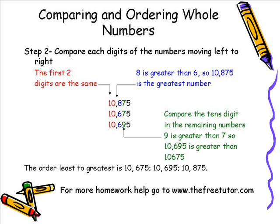Now we continue to move to the right. The next set of digits, we can compare the tens digit in the remaining numbers and you can see that 9 is greater than 7. So we can conclude that 10,695 is greater than 10,675.